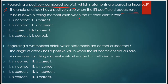Statement two: a nose-down pitching moment exists when the lift coefficient is zero. This is correct — even if the lift coefficient is zero, the nose-down pitching moment will exist for a cambered airfoil, because the upper surface curvature is less compared to the lower surface. For an asymmetrical (cambered) airfoil, a nose-down pitching moment will exist. So option A is the right answer — first statement incorrect, second correct.